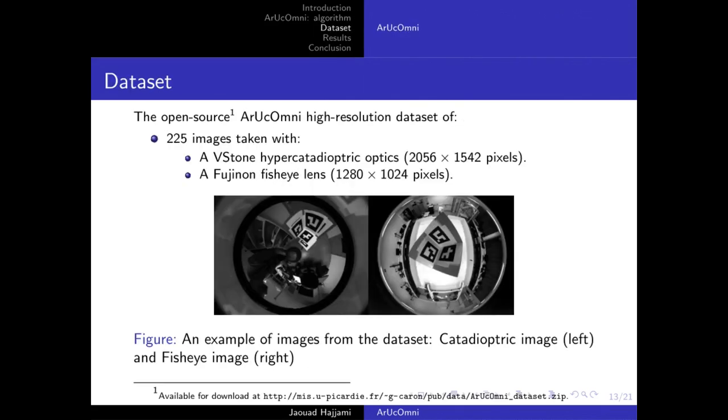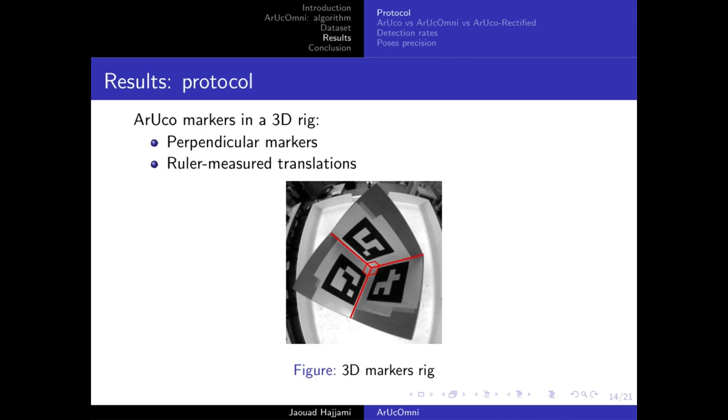For the evaluation, we couldn't find enough images of markers for evaluating AruCo Omni with panoramic images, so we decided to record a new dataset taken with catadioptric and fisheye cameras. This is a high-resolution open-source dataset of 225 images. The dataset captures a 3D marker rig made of three orthogonal planes as shown in this figure. The orientation between the markers is 90 degrees and the translation was manually measured.